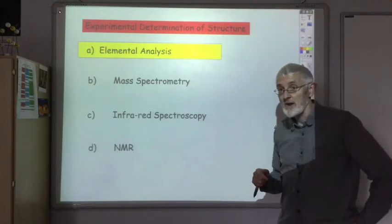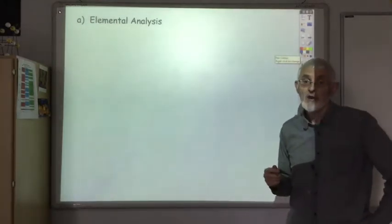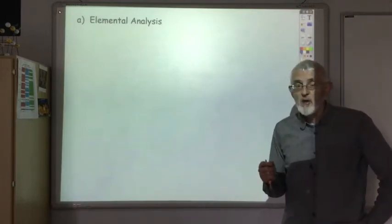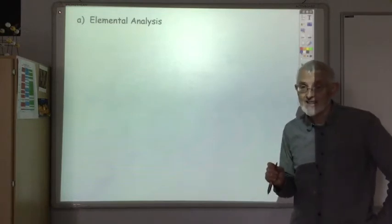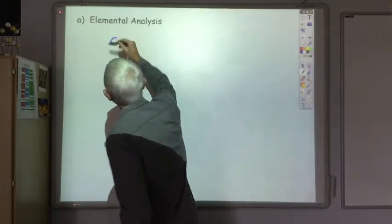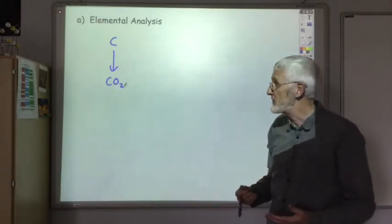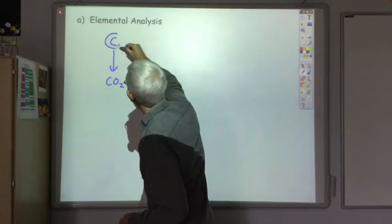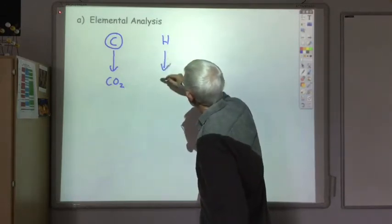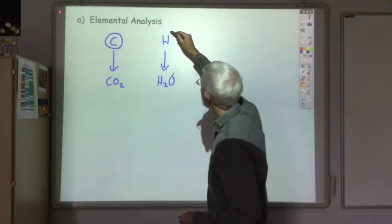So what is elemental analysis? Well, basically it tells you how much of each element you have in your unknown compound. You'd weigh out a known amount of your sample and then burn it in excess oxygen. Any carbon in your sample will be converted into carbon dioxide, so by measuring the volume of carbon dioxide produced you can work out how much of your sample is carbon. The hydrogen in your sample will turn into H2O, so by measuring the quantity of H2O produced you can work out how much hydrogen is in your sample.